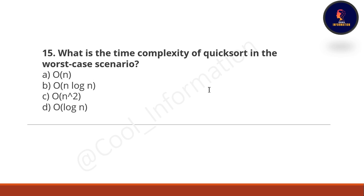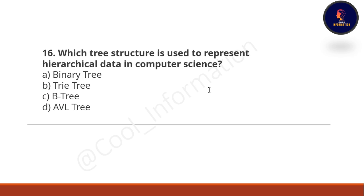Next question: what is the time complexity of quicksort in the worst case scenario? Very simple question — the time complexity of quicksort is O(n²), so option C is correct.